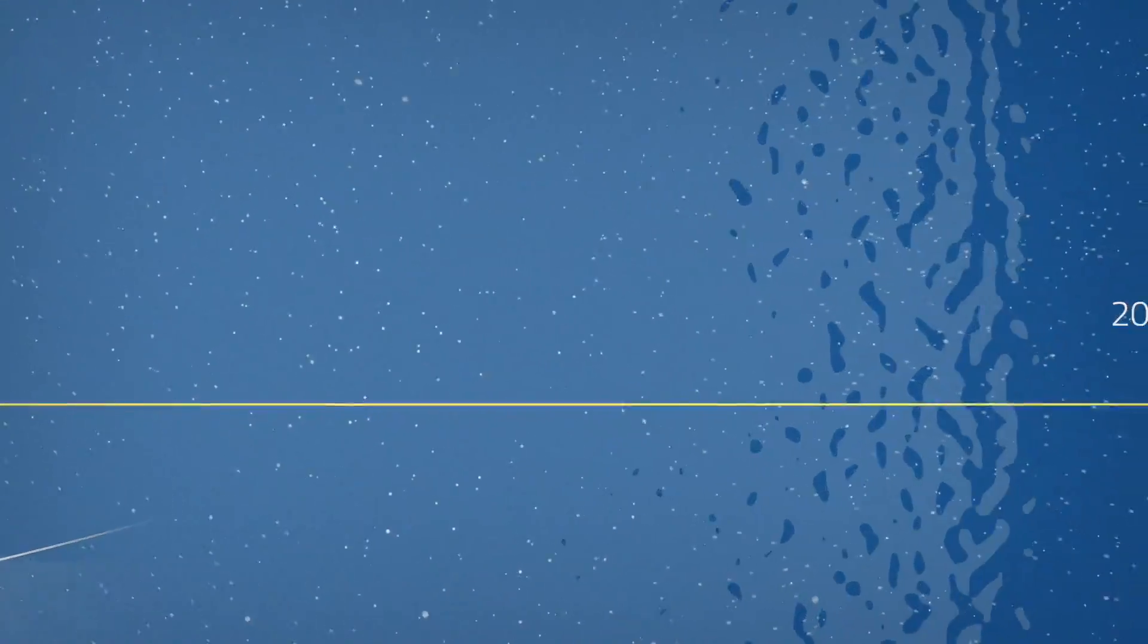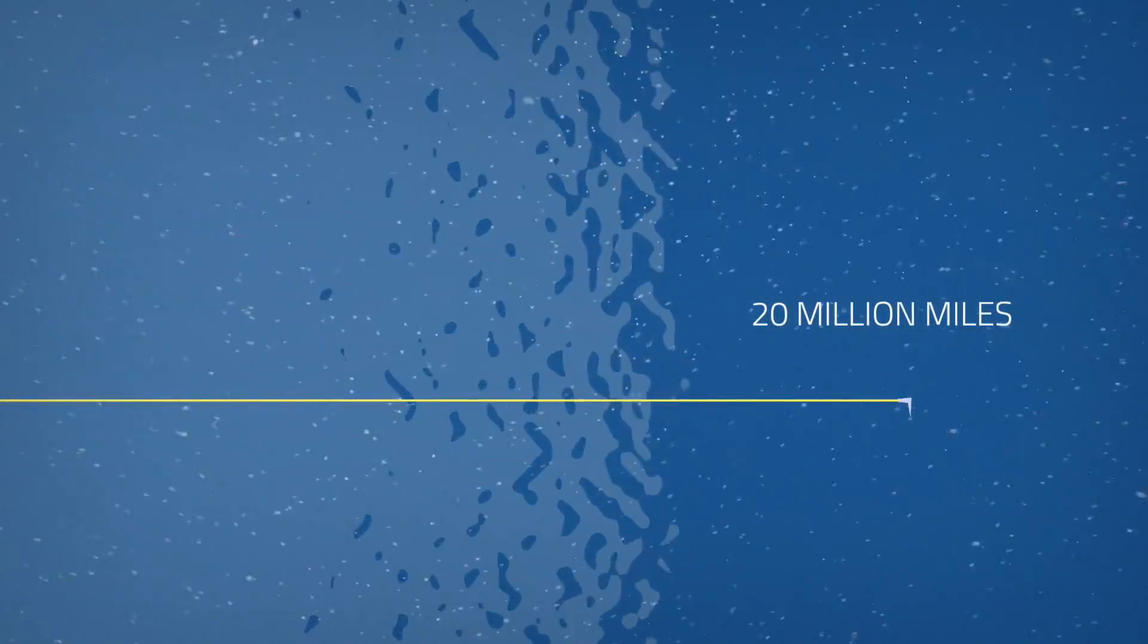About 20 million miles out from the Sun, the very nature of the solar material changes, and the Sun's magnetic field no longer controls its movement.